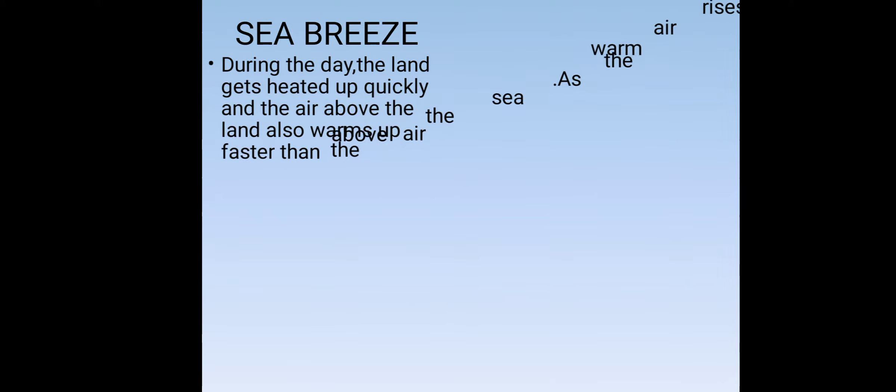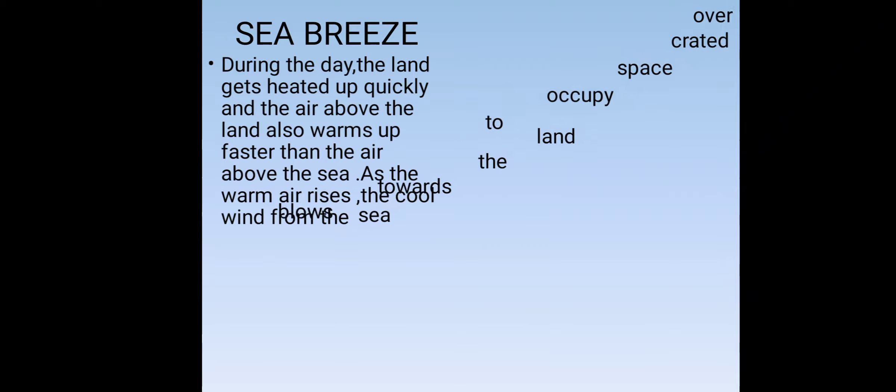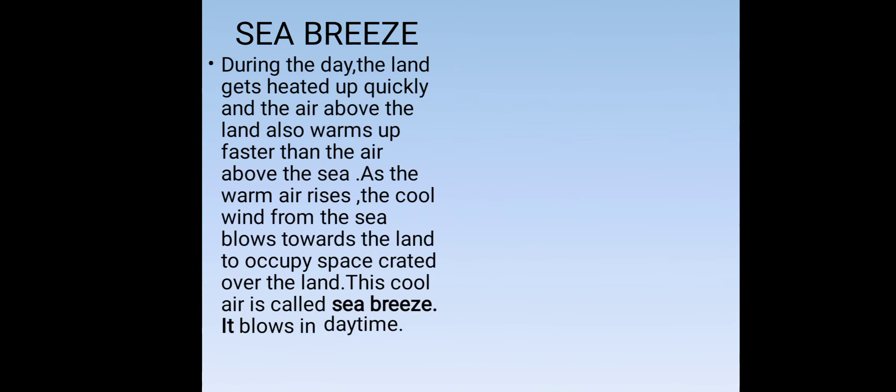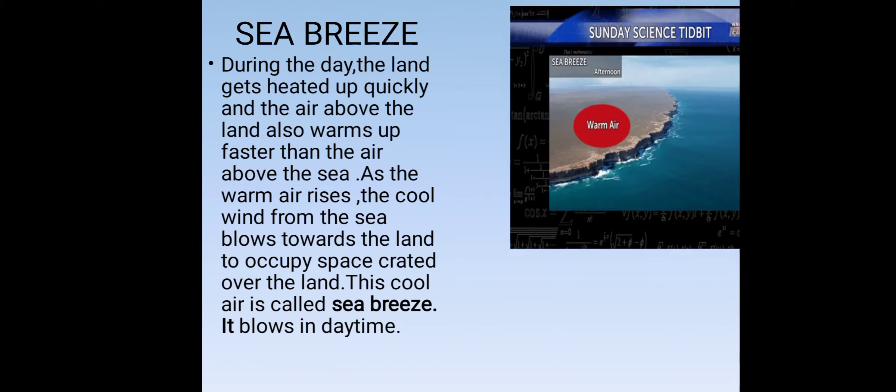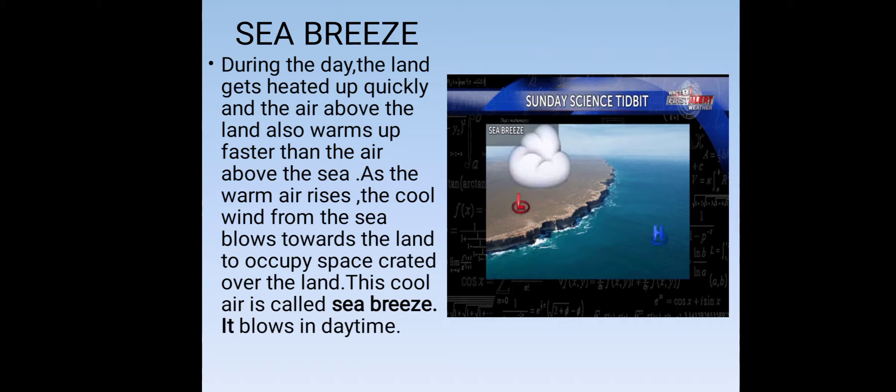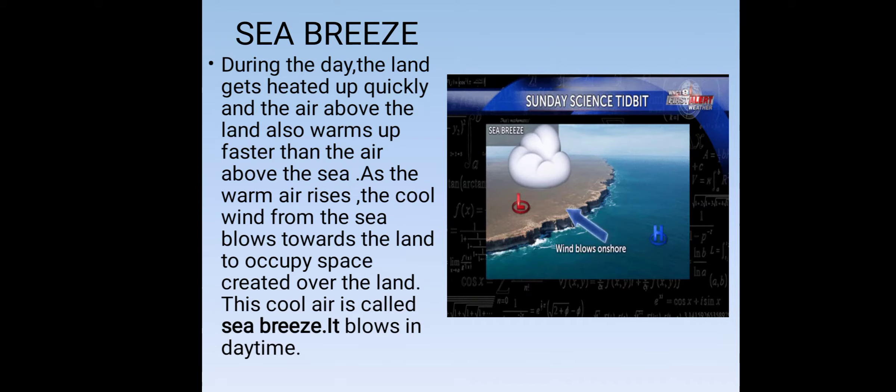So what happens in sea breeze? During the day, the land gets heated up quickly and the air above the land also warms up faster than the air above the sea. As the warm air rises, the cool wind from the sea blows towards the land to occupy space created over the land. This cool air is called sea breeze and it blows in daytime.